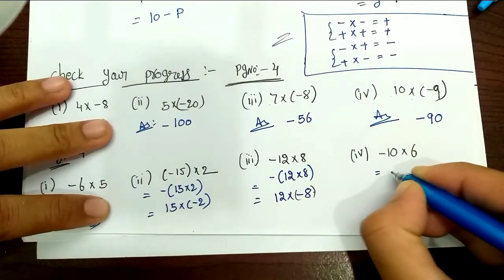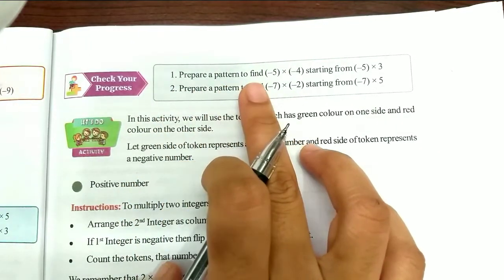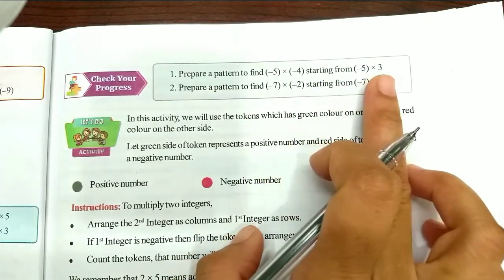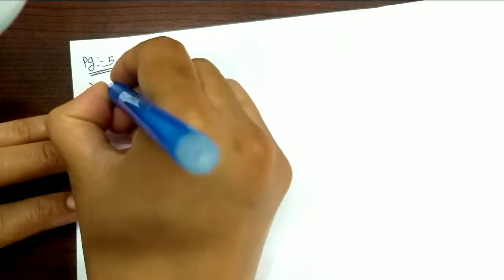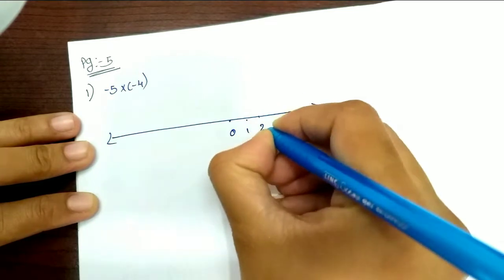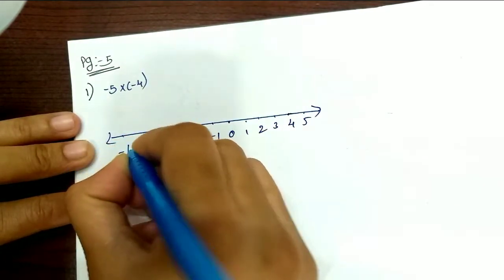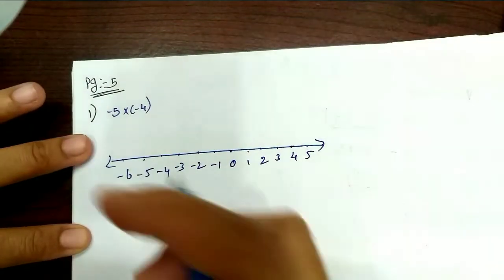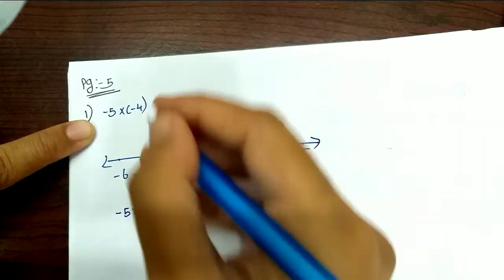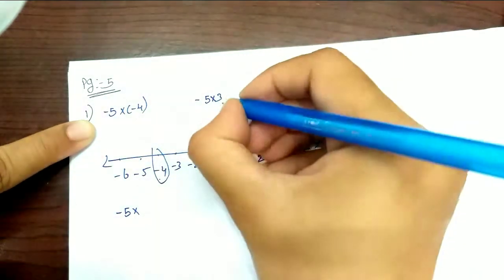Check your progress. 10 into 6, that is equal to 10 into minus 6. Check your progress, page number 5. I am starting from x. That is minus 5 into 3. So 3 will be equal to x. So 3 is minus 3. Here is the starting number. Minus 5 into — next is minus 3.